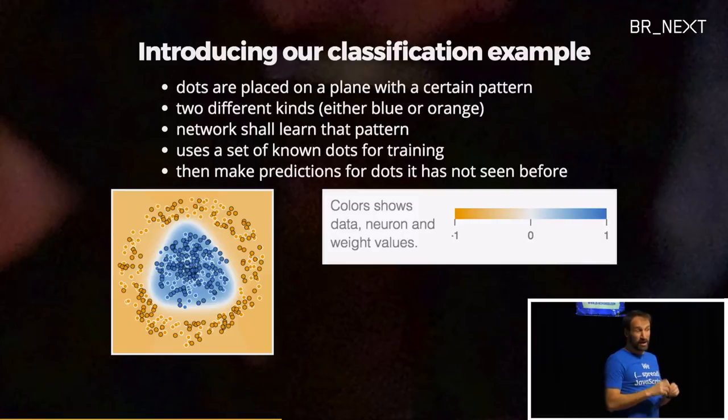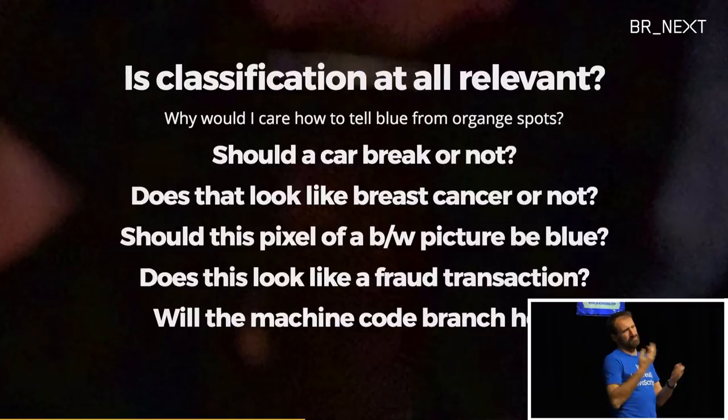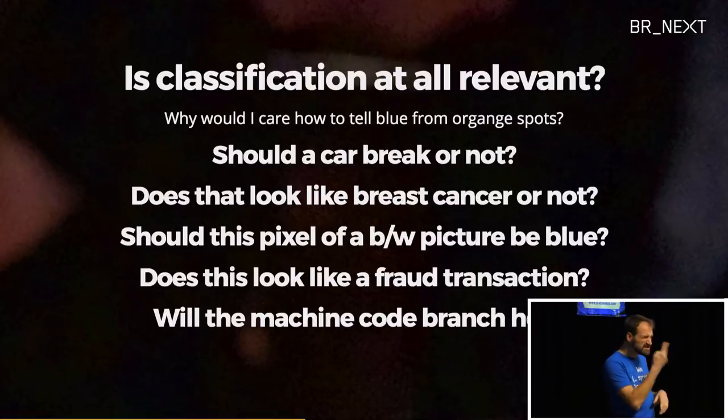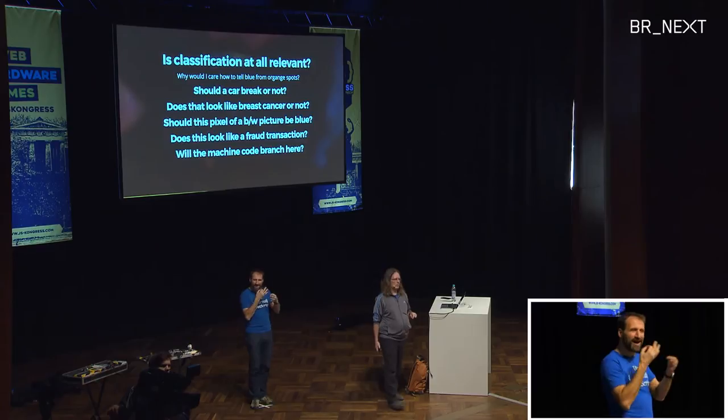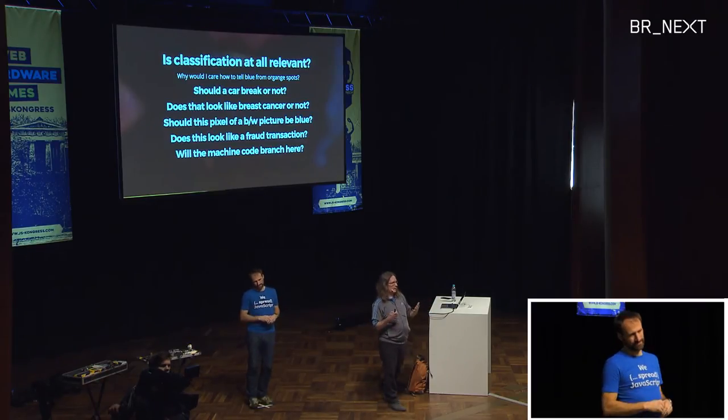Why would you be interested in separating blue dots from orange dots? Classification is a very common thing. You might ask a car: is this a situation where I should brake? Or: does this look like some sort of cancer? Should this pixel in a black and white picture be blue? Looking at credit card transactions: does that look like fraud or not? In that Samsung processor, it's again a classification — is this code going to be branching here or not? Most examples you see are classification.